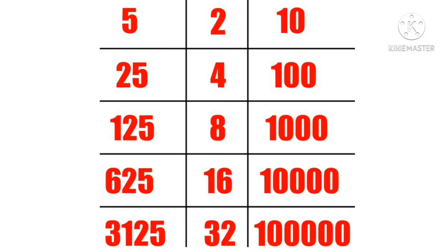If we want to divide a number by 5, then multiply the numerator and denominator by 2. Here, 5 into 2 is 10. In the same manner, if it is 25, then multiply by 4. Here, 25 into 4 is 100. If it is 125, then we should multiply by 8. Here, 125 into 8 is 1000. If it is 625, we should multiply by 16. Here, 625 into 16 is 10,000. If it is 3125, then we should multiply by 32. Here, 3125 into 32 is 1 lakh.